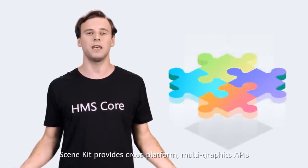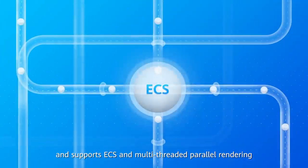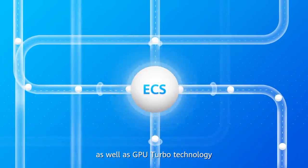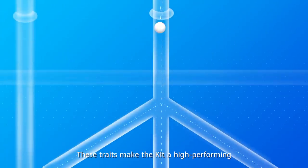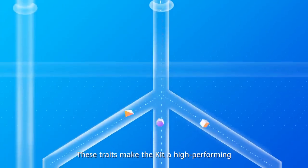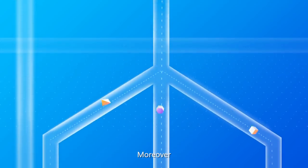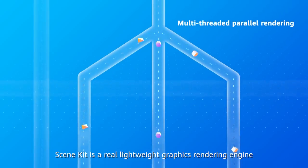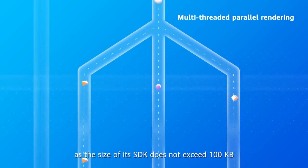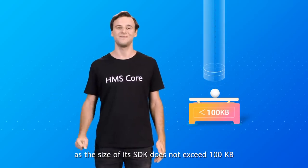SceneKit provides cross-platform multi-graphics APIs and supports ECS and multi-threaded parallel rendering as well as GPU Turbo technology. These traits make the kit a high-performing but power-efficient service. Moreover, SceneKit is a real lightweight graphics rendering engine, as the size of its SDK does not exceed 100 kilobytes.